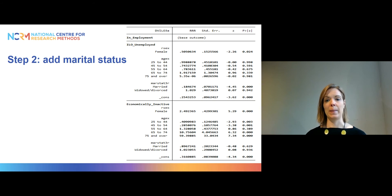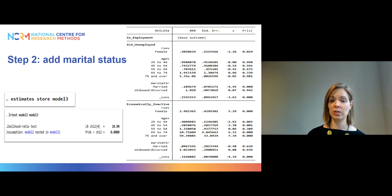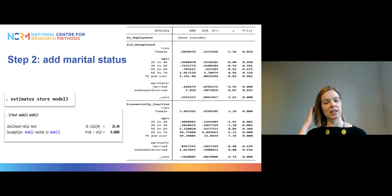In the second step, we add marital status. Again, we can conduct a likelihood ratio test to figure out whether marital status should be included in the model. If we just look at the p-values in the right-hand column of the table, we have some high p-values and some low p-values, so we want to know whether marital status as a whole is significant. In the computer workshop materials you will see how to do that yourself. The result shows a very small p-value, indicating that we should keep marital status in the model.